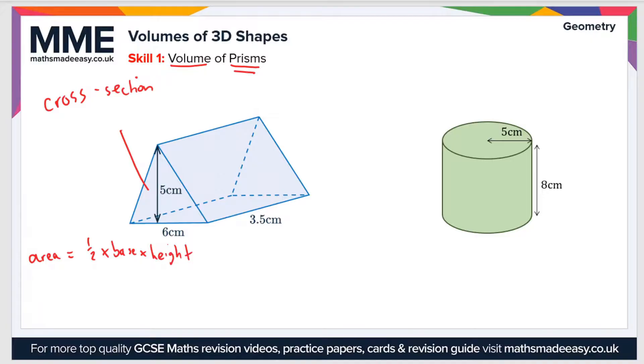If we plug our numbers in, that gives us 0.5 times the base, which is 6cm, times the height, which is 5cm. And that gives us a value of 15cm squared for the area of the cross section.